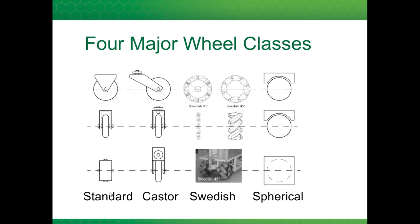First, let's look at the four major wheel classes. We have a standard wheel, which can be either fixed or steerable. If it's steerable, it has two axes of rotation: one, the rolling axis, and two, the steering axis, which intersects the rolling axis. Then you could have a caster wheel, which is typically mounted on a robot to provide no constraint to motion, such as on an office chair. Here the steering axis does not intersect the rolling axis.